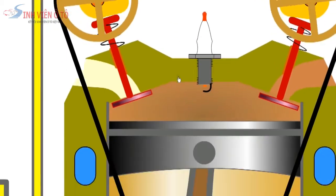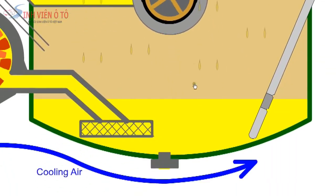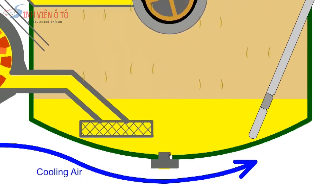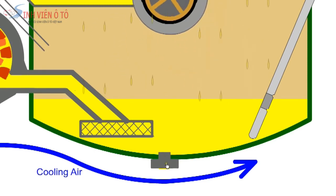When the oil has completed its work, it drains by gravity back to the sump where the heat is dissipated to the surrounding air. Any metal particles in the oil will be deposited at the bottom of the sump where they will be attracted to the magnetic drain plug.